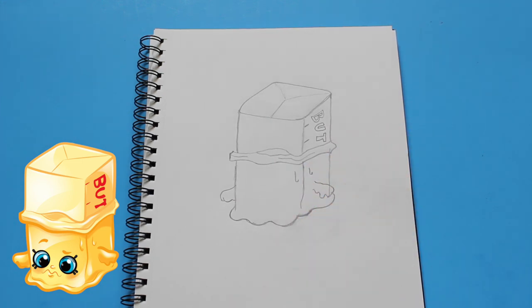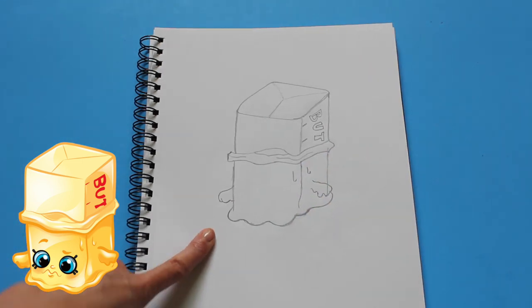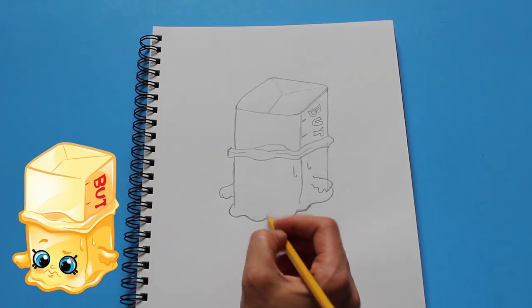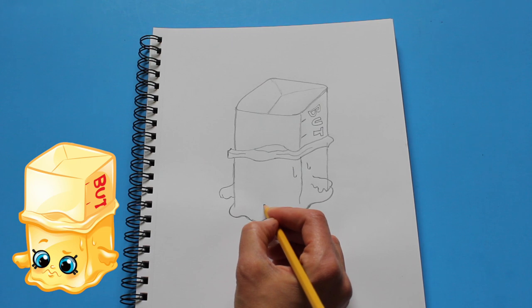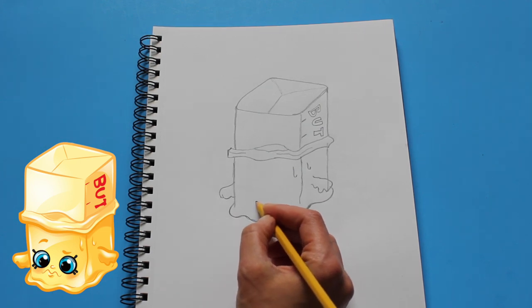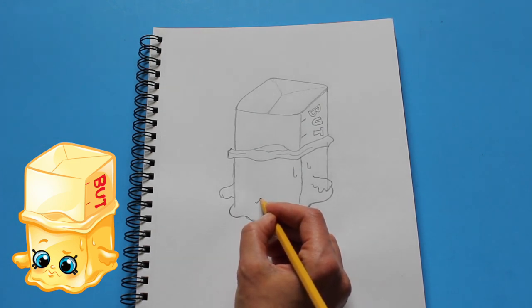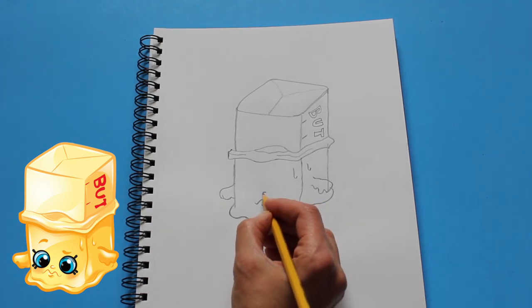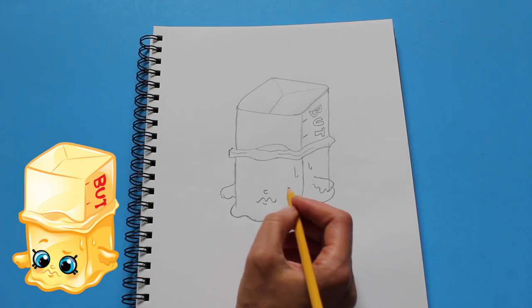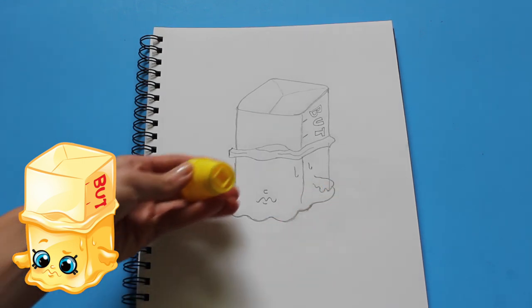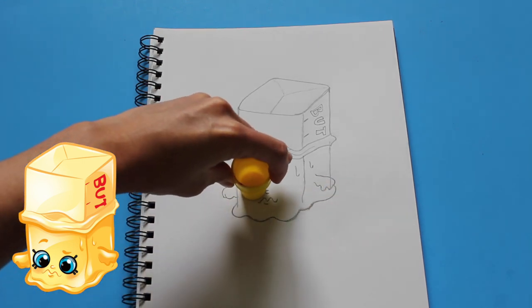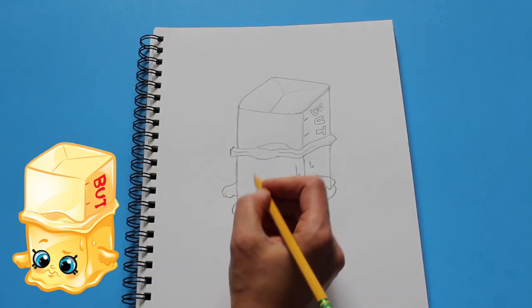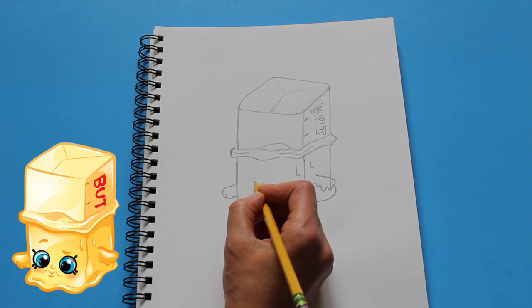And there is our butter so far. I'm gonna go ahead and draw in the face. Let's start out with the mouth - we're gonna find the center, which is right around here. The mouth is very squiggly. The nose is a hook. And the two eyes that we're gonna draw now - I'm not gonna use the Play-Doh tool because the eyes are gonna be way too big, so I'm just gonna do it freestyle. We're gonna draw two circles.